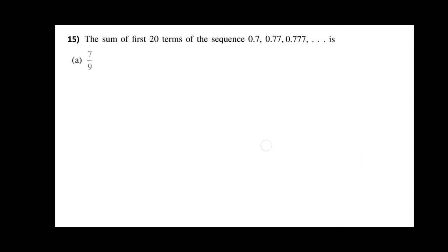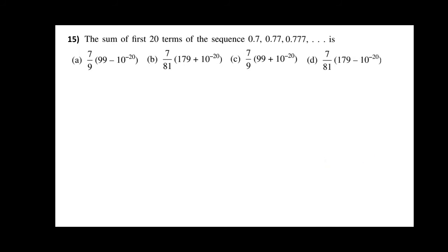Question number 15: The sum of the first 20 terms of the sequence 0.7, 0.77, 0.777, ... is: option A (7/9)(99 − 10⁻²⁰), option B (7/81)(179 + 10⁻²⁰), option C (7/9)(99 + 10⁻²⁰), option D (7/81)(79 − 10⁻²⁰).